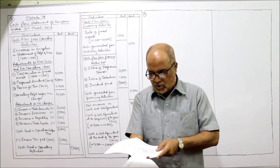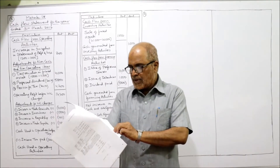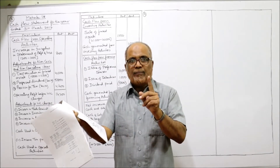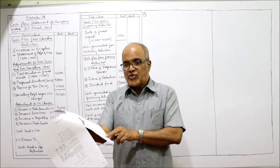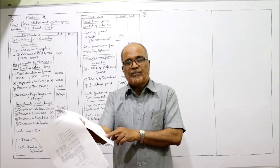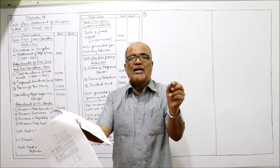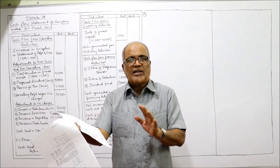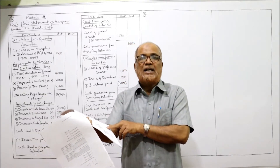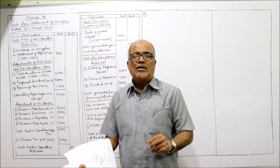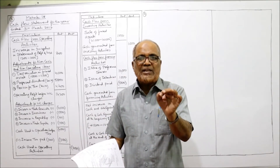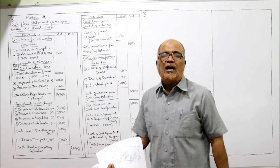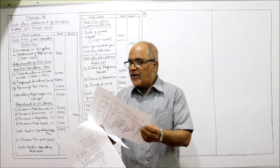We want the breakup of reserves and surplus, which is given in the notes to accounts. From the notes: share capital includes two types — redeemable preference shares and equity share capital. There is no difference in equity share capital — last year 40,000, current year 40,000, no change, so ignore it. Preference share capital: last year nil, current year 10,000. That means during the current year preference shares are issued, which we will take under financing activity.